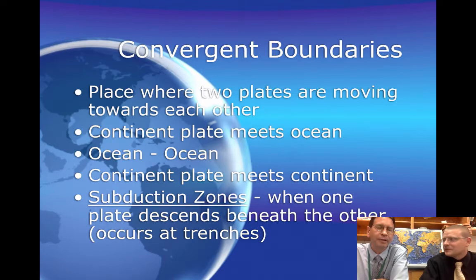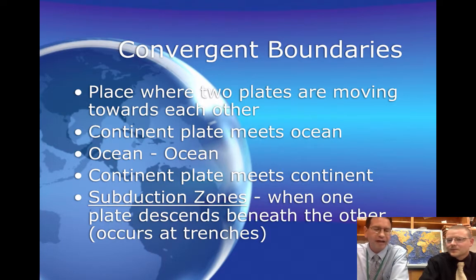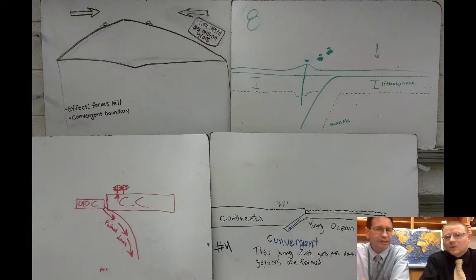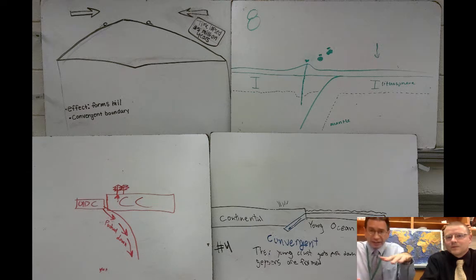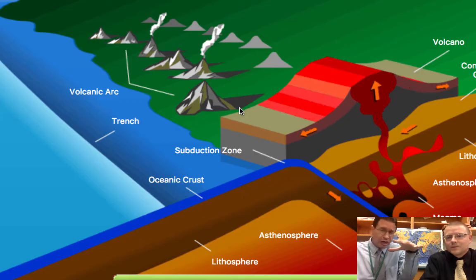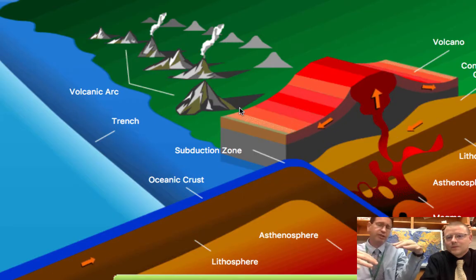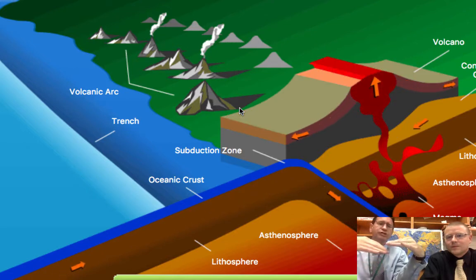Why does that happen? With continental plates, you have a less dense crust, which leads you to have more buoyancy. So it kind of floats on top of the more dense crust, which is the ocean crust.